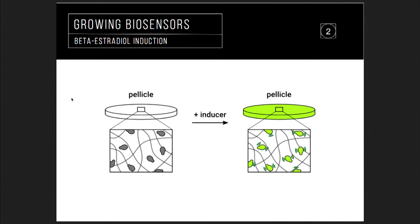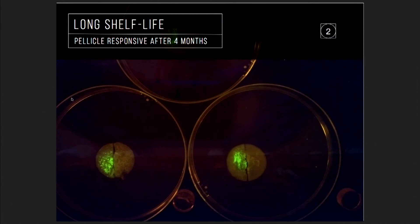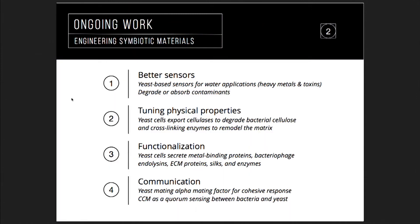We chose environmentally relevant chemicals to test. In this case, human hormones, which are considered major contaminants in some areas. When we add estrogen to the wild-type unmodified strain you don't see any fluorescence, but in the engineered strain you see very strong green fluorescence — and after storing it for four months the response is still visually recognizable. Going forward, we want better sensors. We're collaborating with other labs at MIT to produce proteins that can pull down metals or produce toxins to kill pathogens, and we're also tuning physical properties and working on communication between bacteria and yeast.